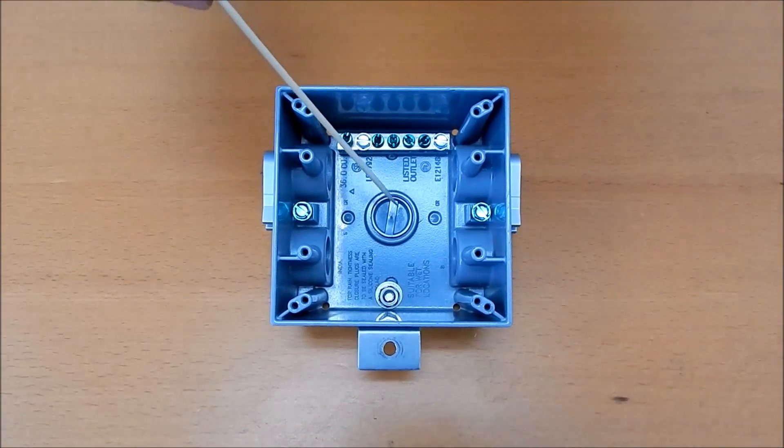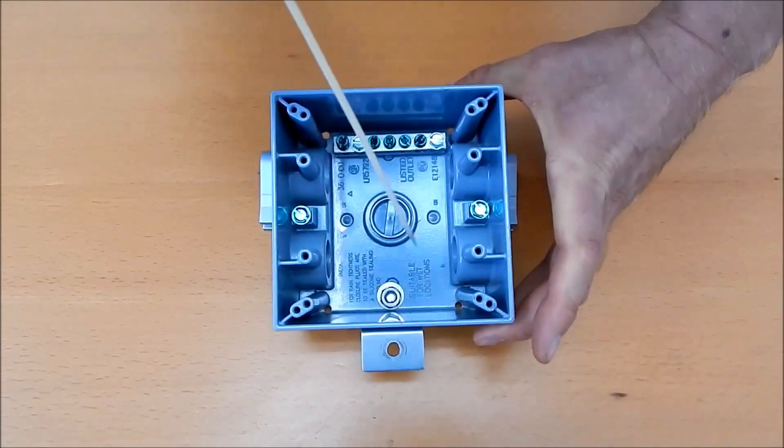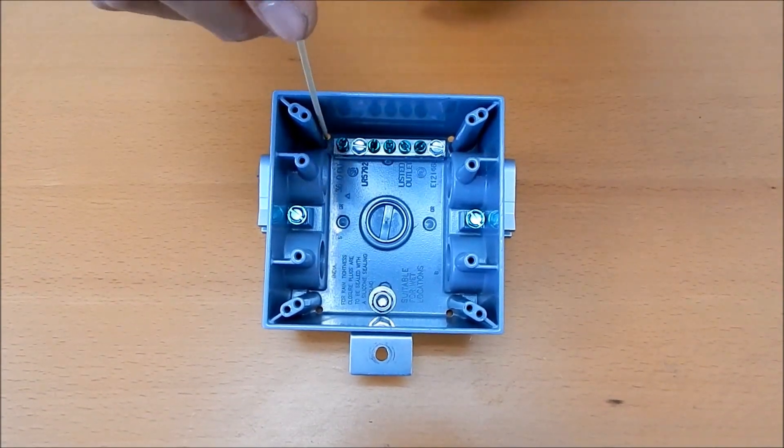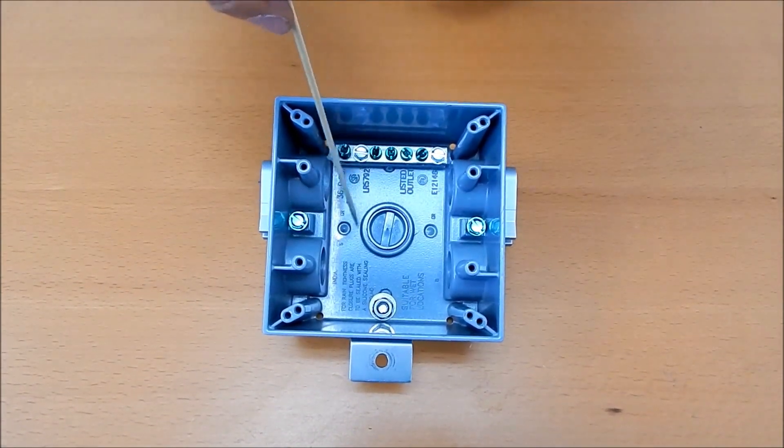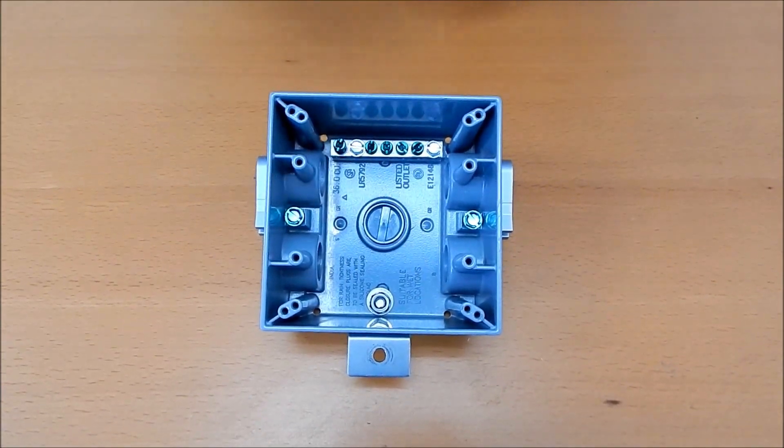One of the other things that we've done to modify the J-Box here is that we've got these holes drilled in the corners. And these are what they call weep holes. What they're designed to do is if there's any water intrusion in the box, you don't want it to stay in there. You want it to escape, and so that's what these holes are designed for.